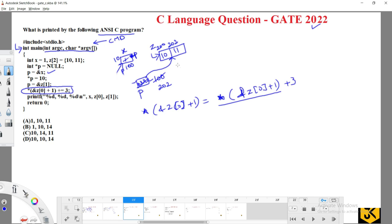Address of z[0] is 200, meaning this value is 200 + 1. When you perform arithmetic operations on an address, you need to increment by the size of the data type. So 200 + 1 × 2 = 202. *202 is 11.